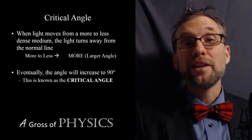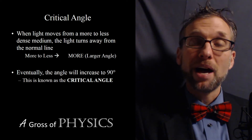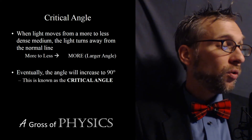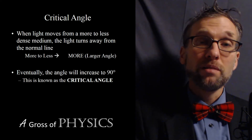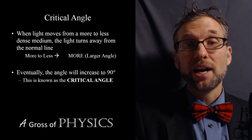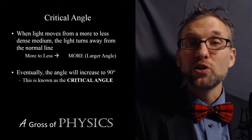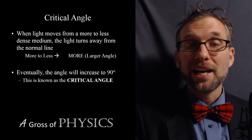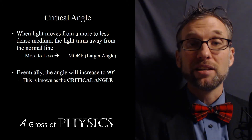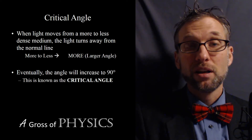In order to find the critical angle, we use Snell's law and slightly modify it. We use N1 sinθ1 = N2 sinθ2, where θ2 is always 90 degrees, because we want the critical angle to be the angle of incidence that will produce refraction of 90 degrees.